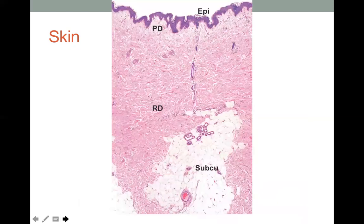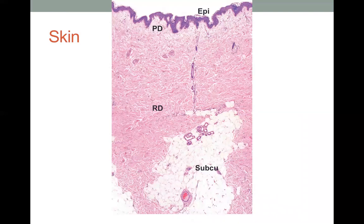This picture shows the epidermis at the top. PD stands for the papillary dermis and RD is the reticular dermis. The papillary layer of the dermis is connective tissue — specifically connective tissue proper. The specific subtype is loose connective tissue, and the reticular dermis is dense irregular connective tissue.